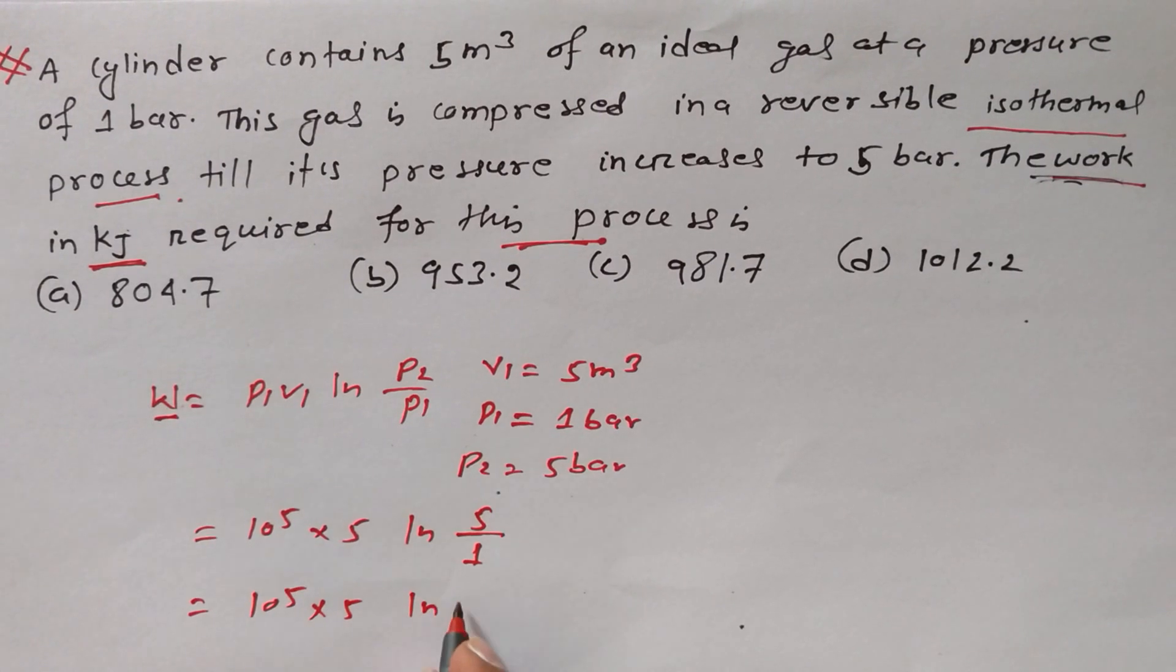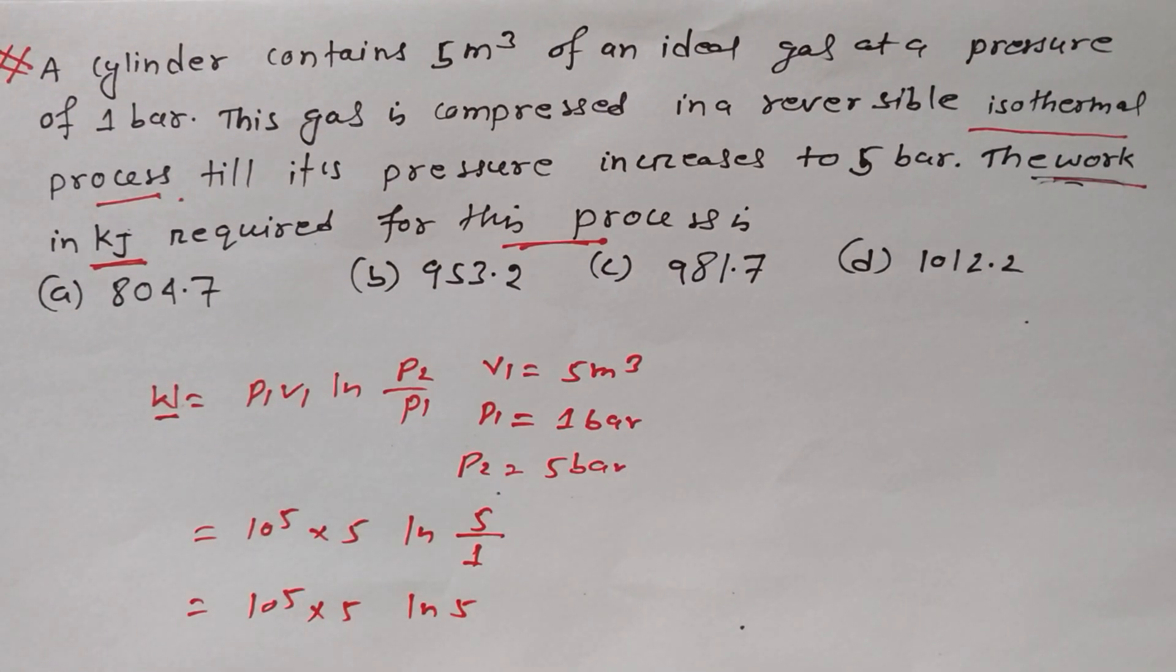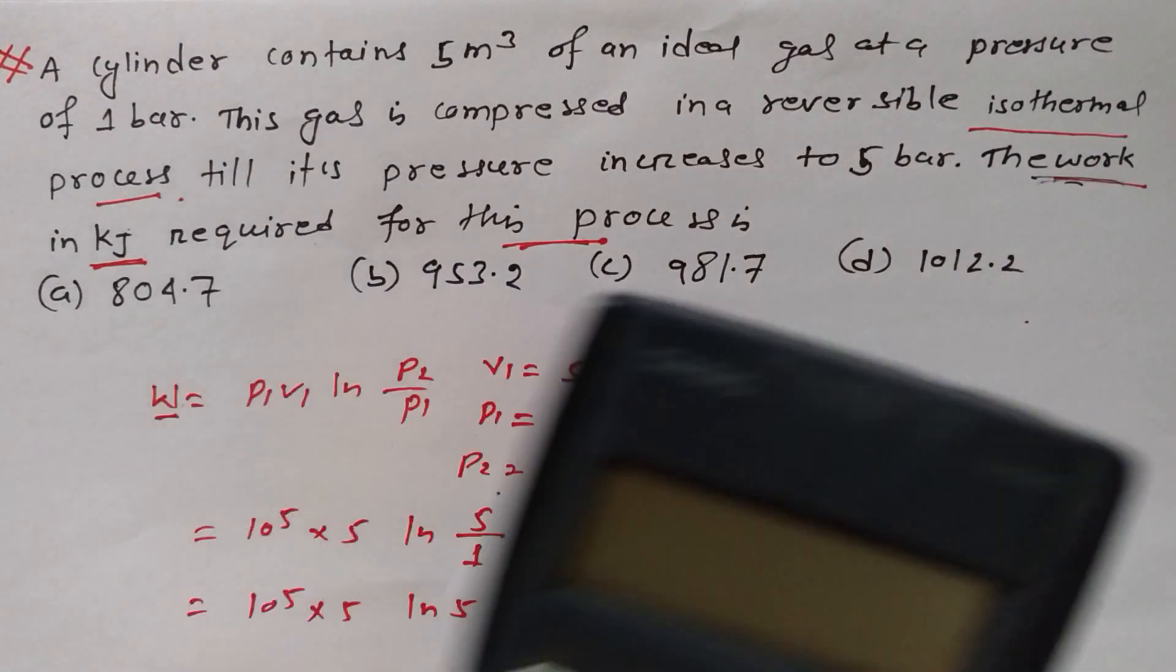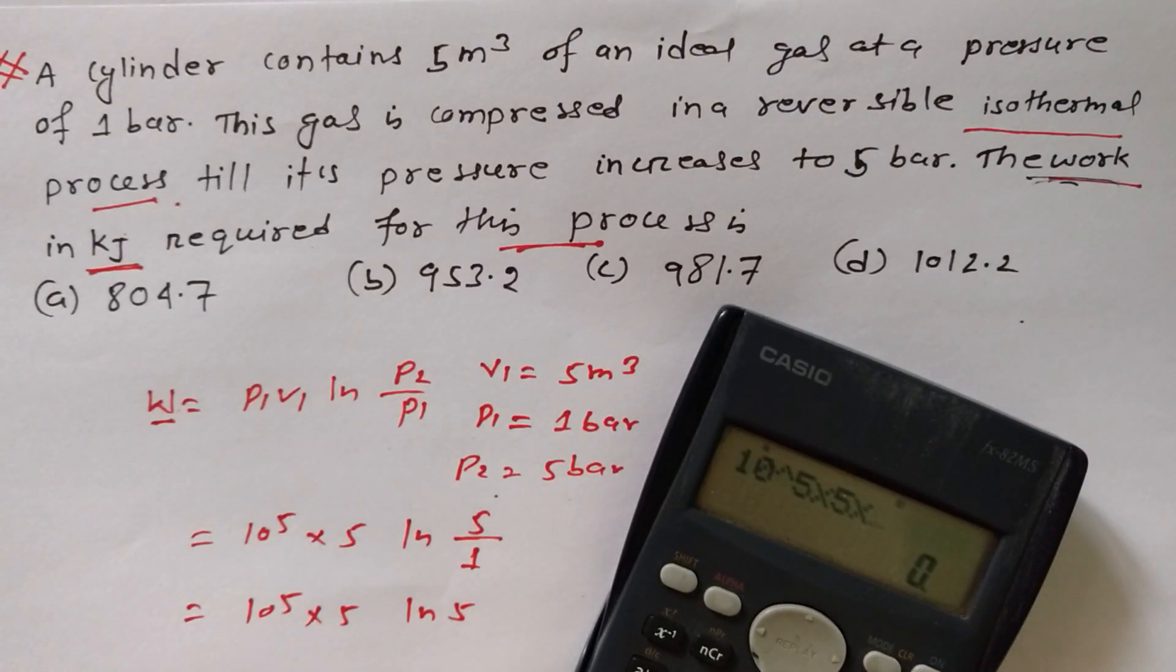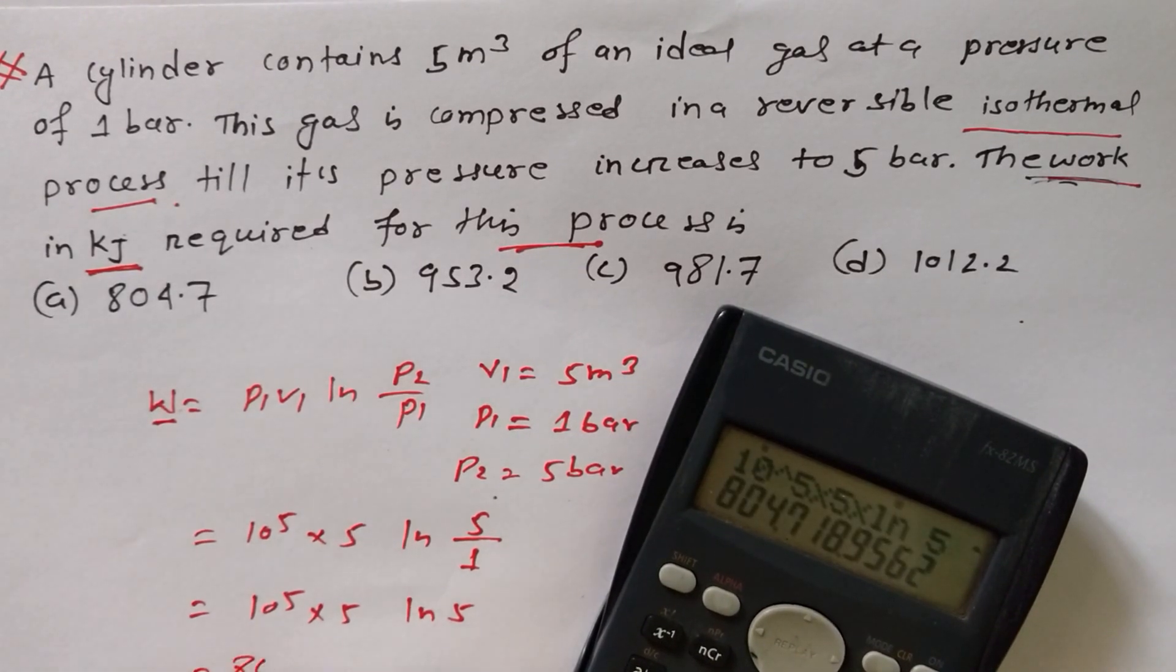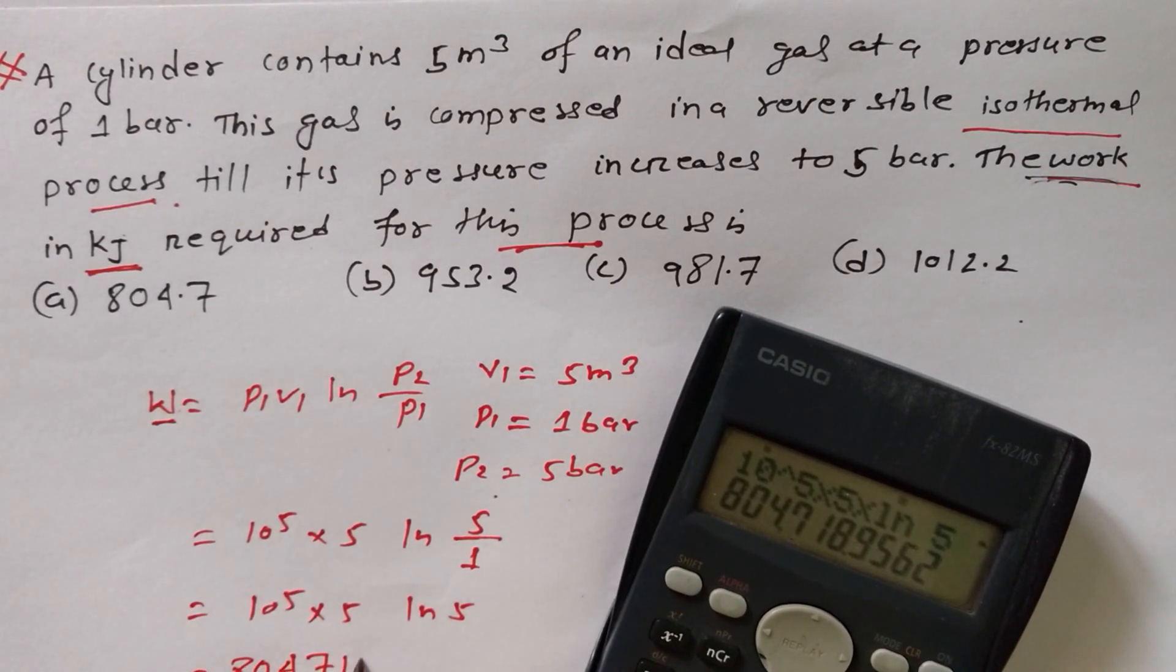That means 10 to the power 5 into 5 natural log 5. So now I have to find out the answer for this question: 10 to the power 5 into 5 into natural log 5 is equal to how much?